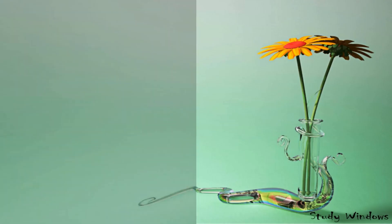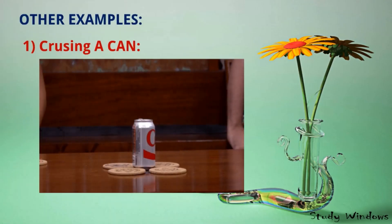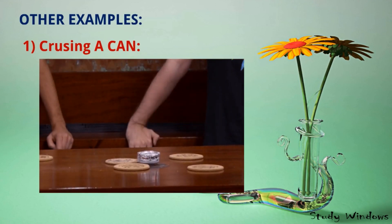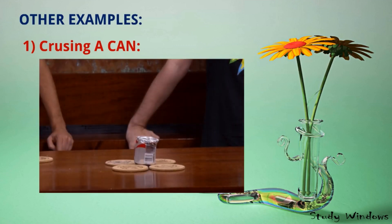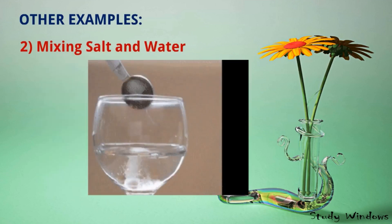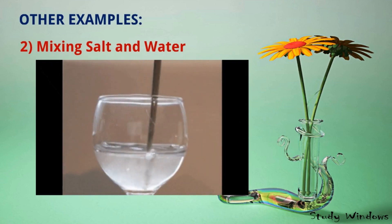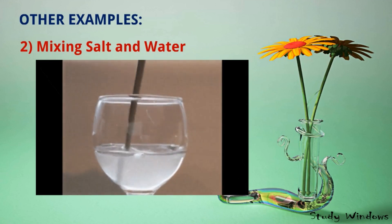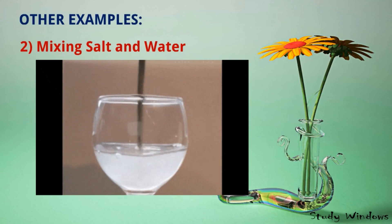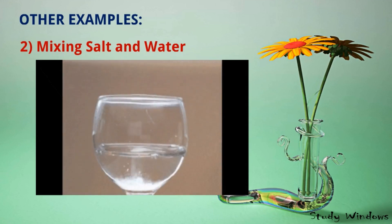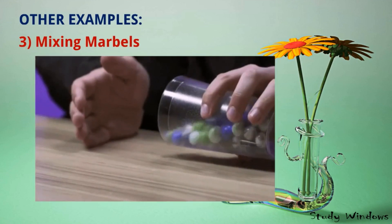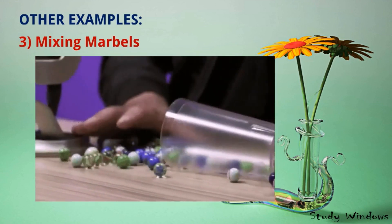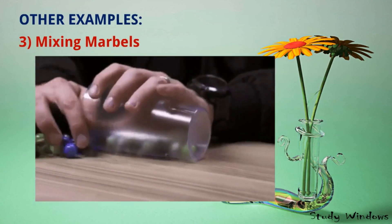Other examples: Crushing a can — no new substance, no change in chemical properties, size and shape is changed. Mixing salt and water — no new substance is produced; we can separate the salt and water anytime by heating the solution so water vaporizes and we get the salt back. Mixing marbles — we can mix marbles of different colors and separate them at any time. These are all physical changes.